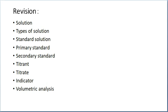Then we have seen the types of standard solution. The first one is primary standard and the second one is secondary standard. A primary standard must possess the following properties: it should be highly stable — that is 99.98% purity — and highly pure. It should not be hygroscopic and deliquescent. Then it should be easily soluble, and it must not be expensive. Examples of primary standards are sodium carbonate, sodium chloride, oxalic acid, and ferrous ammonium sulfate.